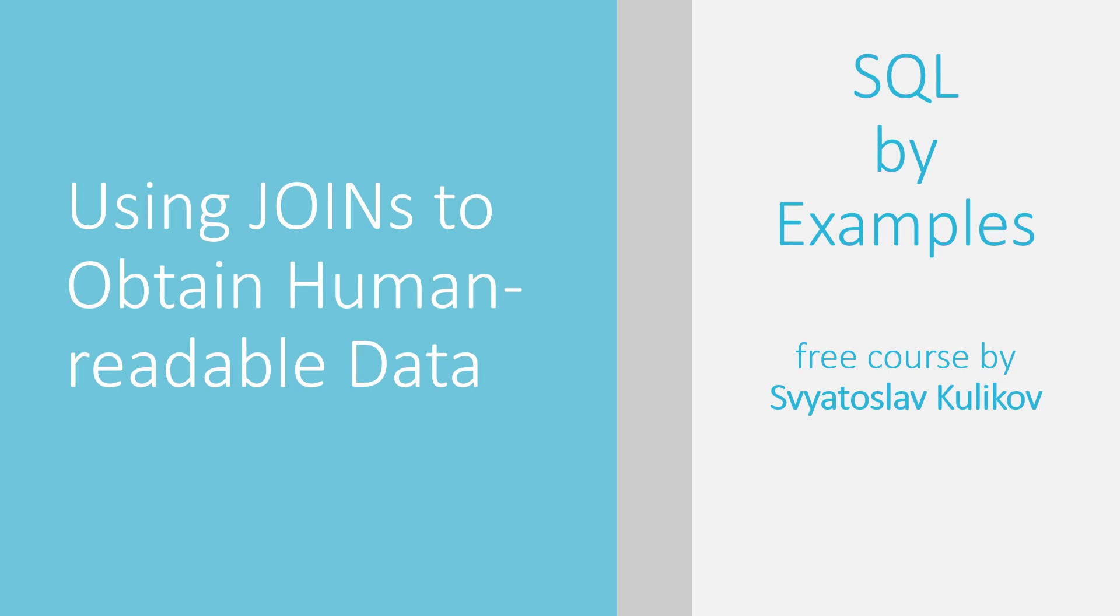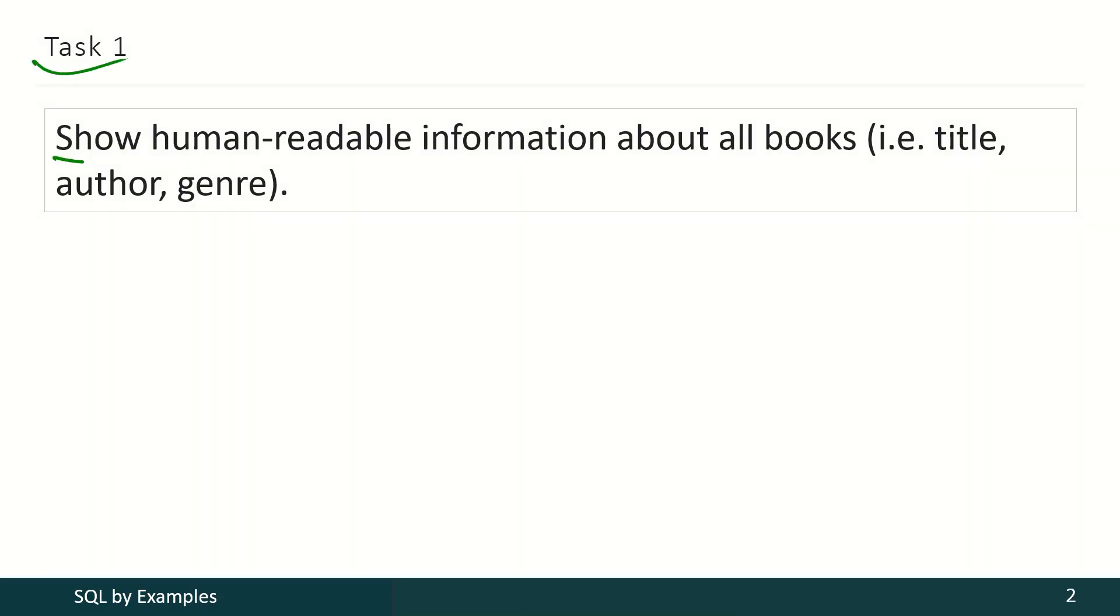In this video we shall discuss how to use the JOIN operator to obtain human-readable data. In the first task, we shall show human-readable information about all books, i.e. title of a book, author name, and genre name.